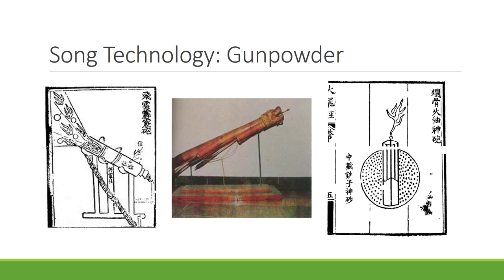Another major technology is gunpowder, used primarily to make weapons. Song-era weapons included a primitive cannon, a rocket — essentially a tube stuffed with arrows and gunpowder with rockets on the side that would go screaming toward enemies — and a bomb made of a large iron ball filled with gunpowder that, when ignited, sent iron fragments exploding in all directions. Gunpowder was a big breakthrough and helped them ward off northern invaders.